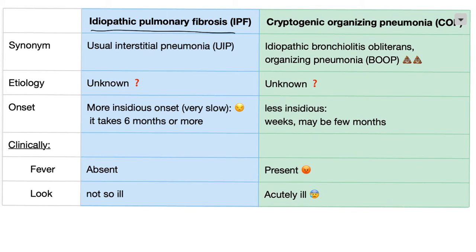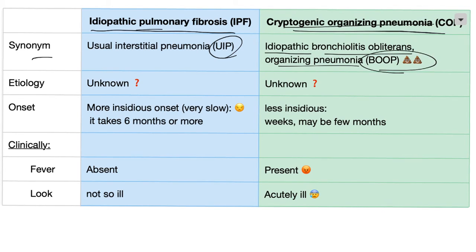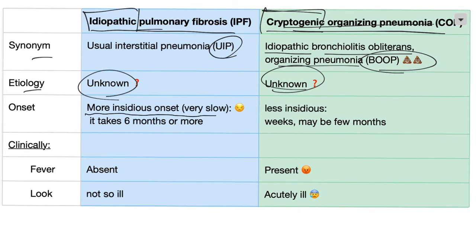Let's compare idiopathic pulmonary fibrosis and cryptogenic organizing pneumonia. Synonyms: idiopathic pulmonary fibrosis is the same as usual interstitial pneumonia; cryptogenic organizing pneumonia is the same as idiopathic bronchiolitis obliterans organizing pneumonia, or BOOP. Etiology is unknown for both — that's why we call them idiopathic and cryptogenic respectively. Onset: IPF is more insidious, very slow, taking more than six months. COP is less insidious — weeks to maybe a few months.